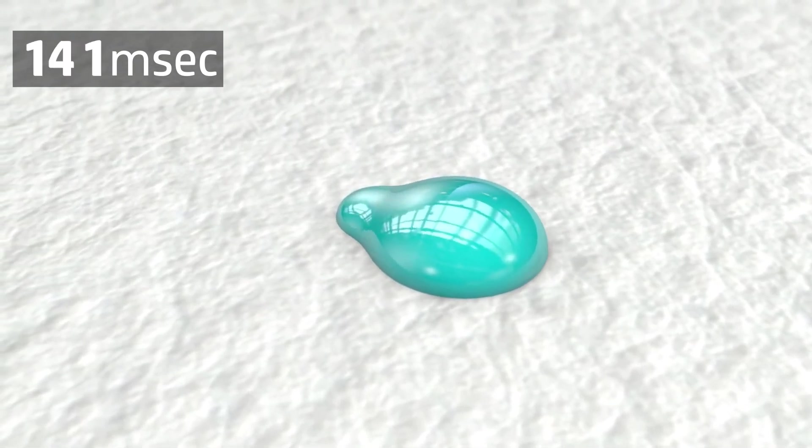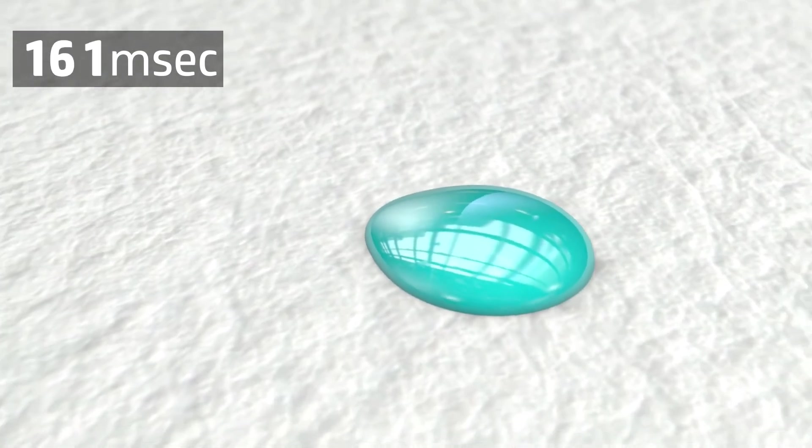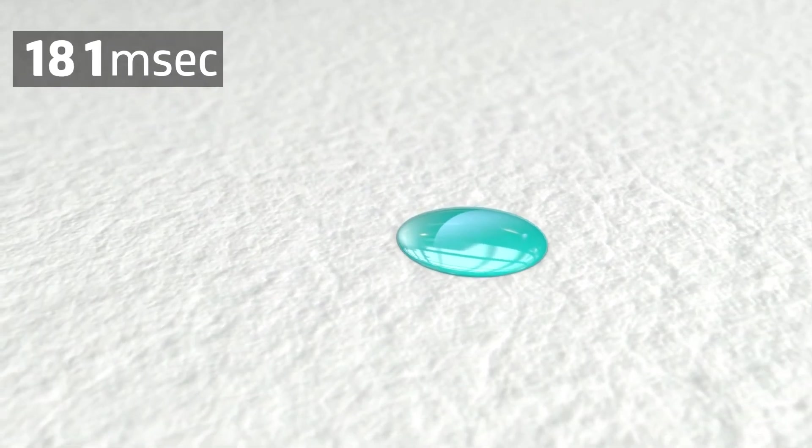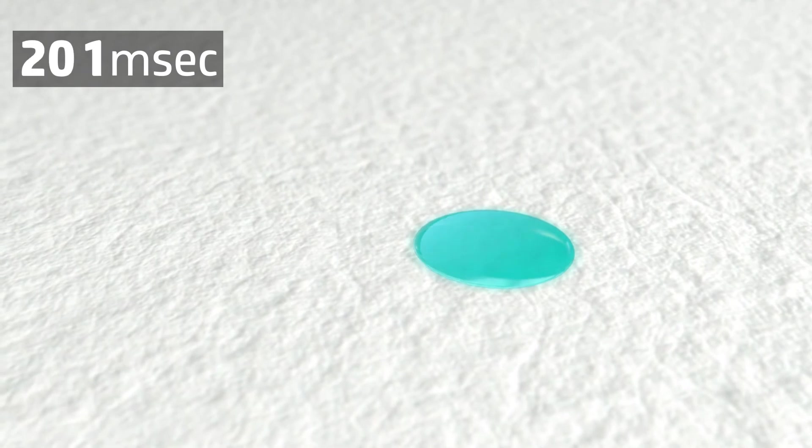The ink now wets the surface and spreads out to form a dot. Ink is made from a colorless ink vehicle and a colorant which is a dye or a pigment. With HP pigment inks, pigments remain near the surface to produce a durable image with dark blacks and vivid colors.